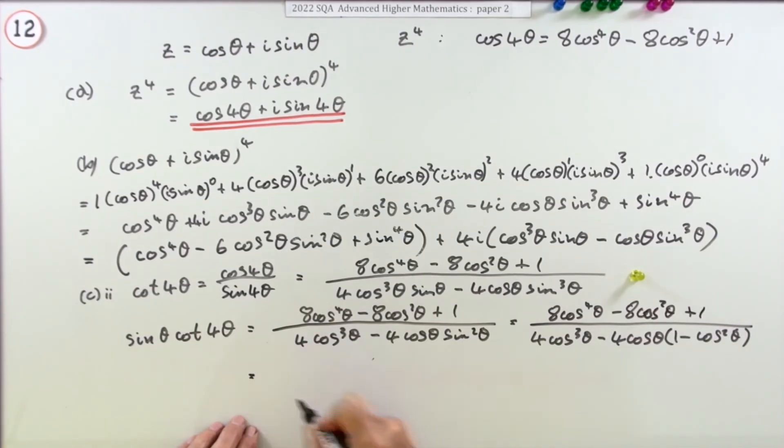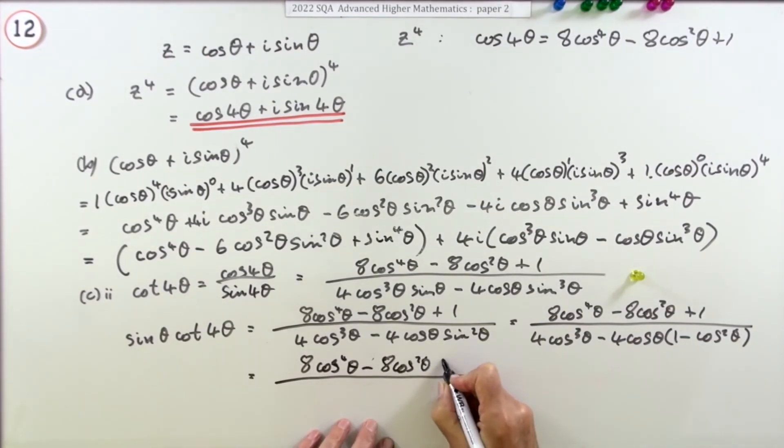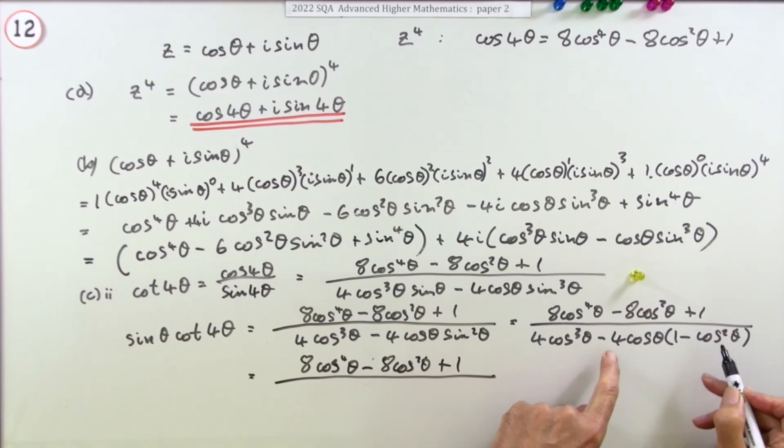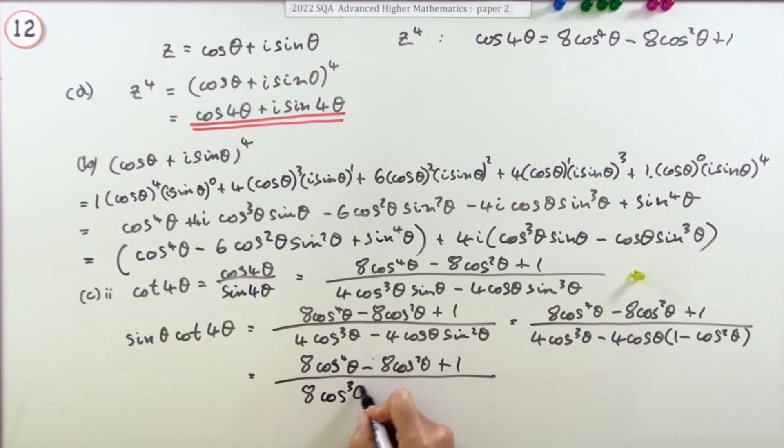So finally bring that across and tidy it up. So the top again just stays the same, same numerator. So tidying it up from this, I'm going to have a minus 4 cos theta and a plus 4 cos cubed. So that 4 cos cubed can add on to that 4 cos to make an 8 cos cubed theta and then minus a 4 cos theta. Now you get the last mark. And there we go, thank you.